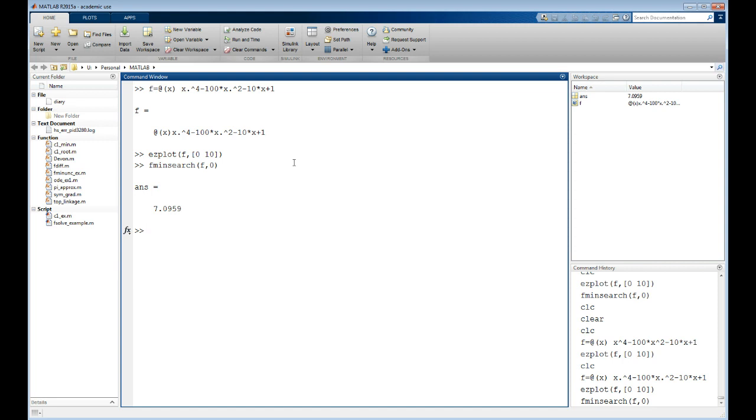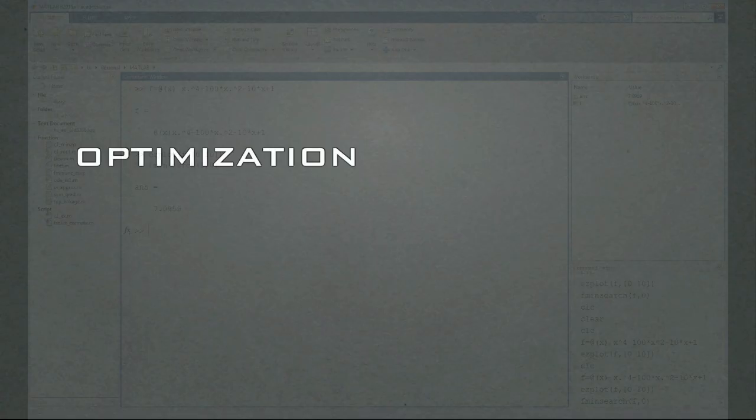Okay, so there we've got it. We've defined a simple objective function. Done a plot of it. And used fmin search to find its minimum. Hope this helps. We'll talk to you next time. Bye. Bye.